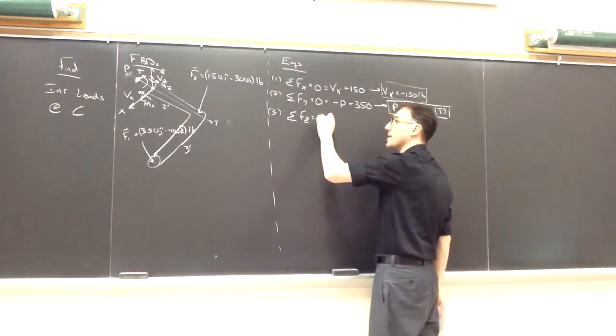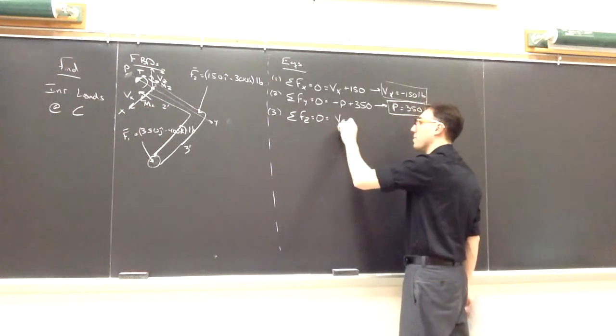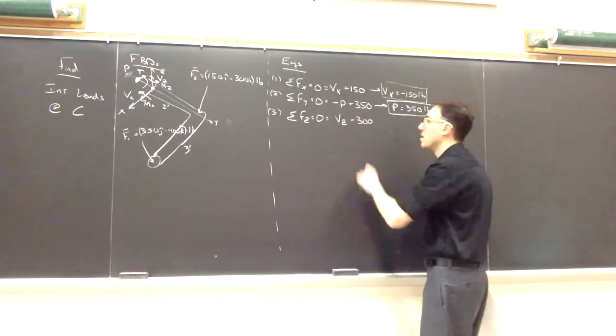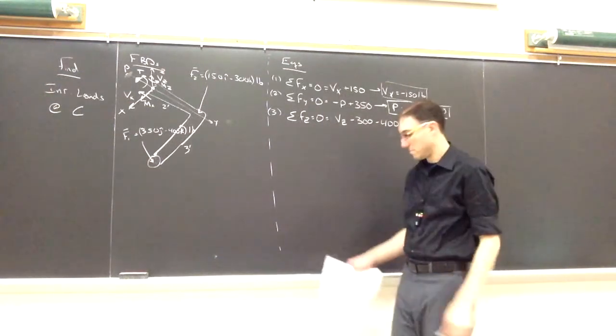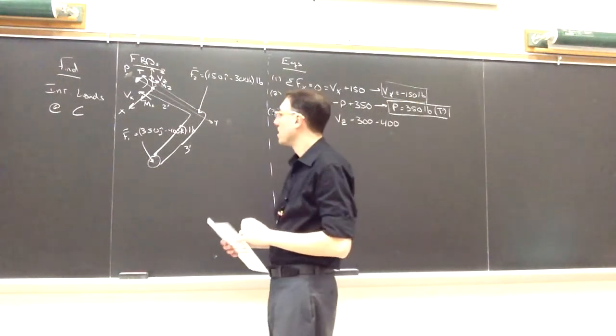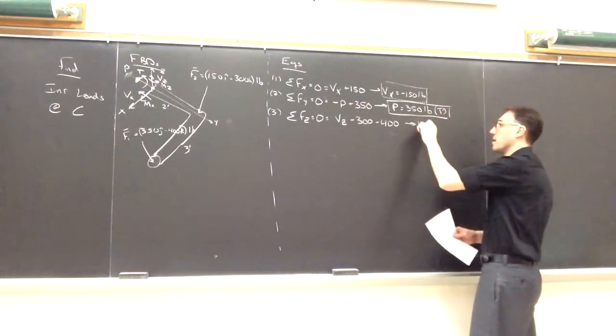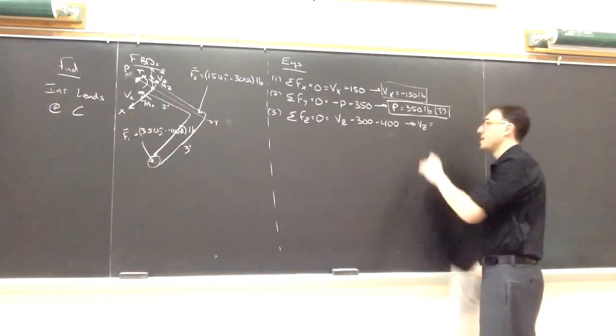And finally, in the z direction, I have Vz, I'm assuming is positive, minus 300 from F2, minus 400 from F1. So solving equation number three, I get Vz is 700 pounds.